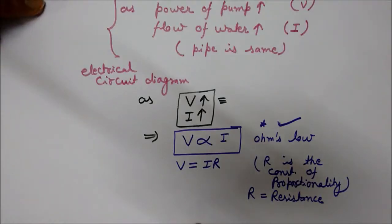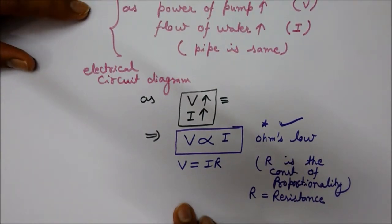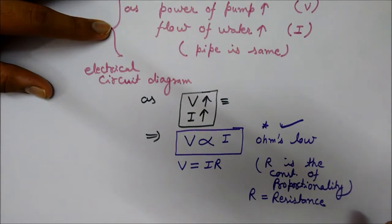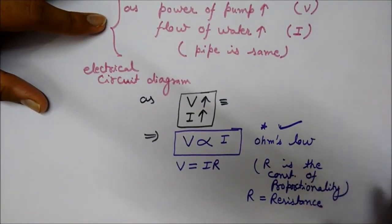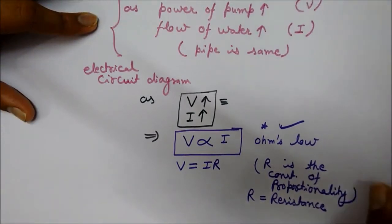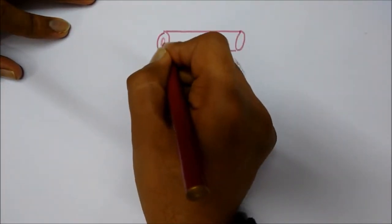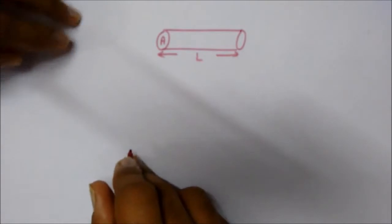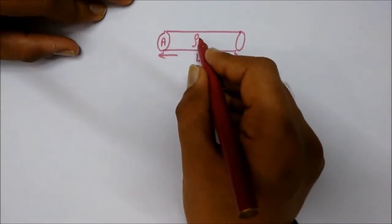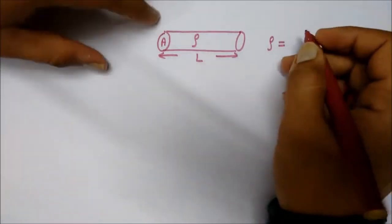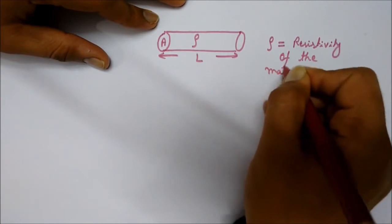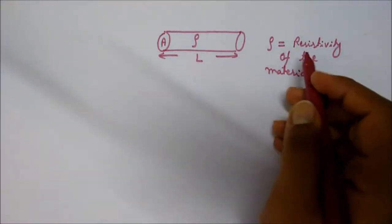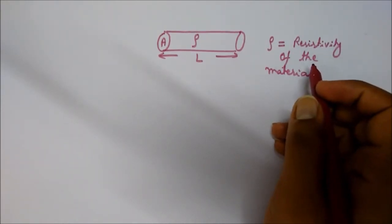In our next topic we will cover the properties of resistance and how variations in different parameters can change the resistance of a resistor. Let's take an example of a wire — a simple conductor having an area of cross-section A and its length L. Rho is the resistivity of the material, also called specific resistance.